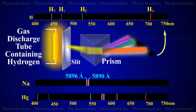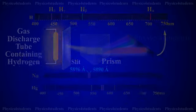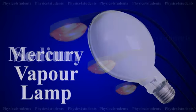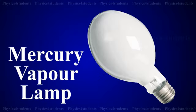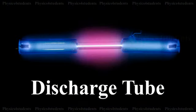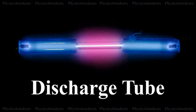Atoms in the gaseous state, i.e. free excited atoms, emit line spectrum. The substance in atomic states such as sodium in sodium vapour lamp, mercury in mercury vapour lamp, and gases in discharge tubes give line spectra.